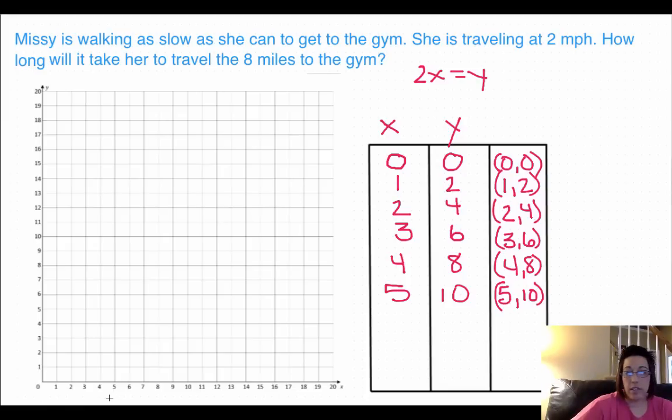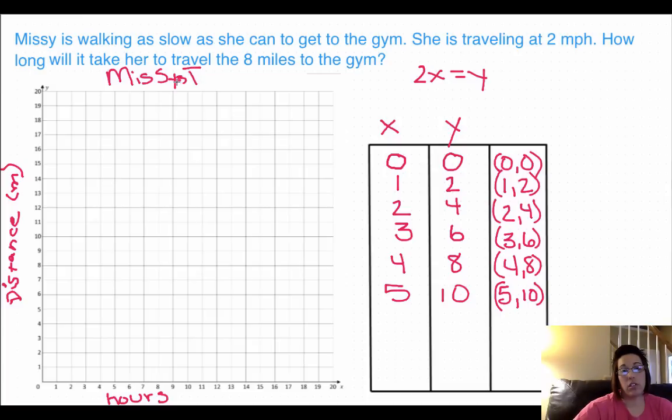So this across the bottom is going to be hours. Up the side is going to be distance. Okay, and we're going to put in parentheses miles because it's always important to tell how you're measuring this. We'll call our graph Missy's trip to the gym.